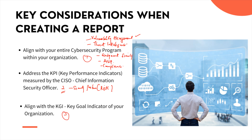Thirdly, consider the key goal indicator, which varies by organization. Your organization might say they want to increase security posture from 60% to 90% within a two-year period, for example. Whatever reporting you provide should align with this key goal indicator. Whenever you're creating a report, put on your management hat and ask what things will be of interest to management — because you are documenting and communicating security findings to top management for them to make informed decisions.